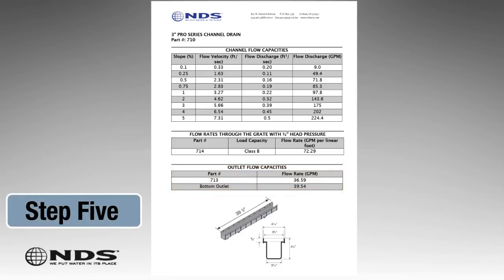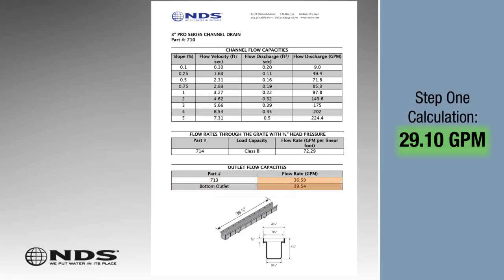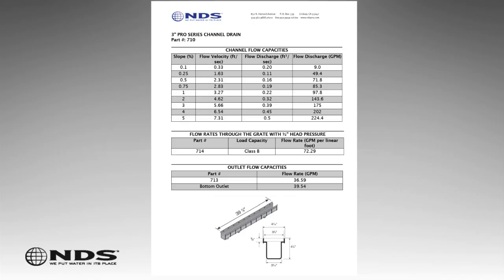Step 5: Determine which outlet will be used to drain the channel. If the flow rate in the flow rate column is less than the calculated runoff, choose a larger channel drain or different outlet. If the flow rate in the flow discharge column is larger than the calculated runoff, then the channel drain chosen will work for your drainage project.